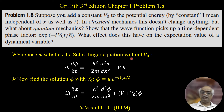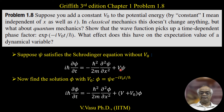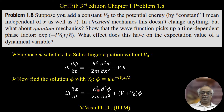Suppose psi satisfies the Schrödinger equation without V-naught. That is, the Schrödinger equation is: i h-bar times delta psi over delta t equals minus h-bar squared over 2m times delta squared psi over delta x squared, plus V psi. Now we are going to find the solution with V-naught added.